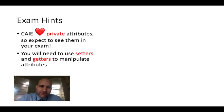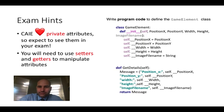Now a couple of exam hints for you Cambridge A-level people. CAIE love their private attributes. Absolutely love them. So expect to see them in your exam. You will also need to use these setters and getters to manipulate attributes. Okay, here is an exam question. Write program code to define the game element class. And tada, that is the mark scheme. Isn't it beautiful? Yes, if you are a real pythonista, please look away now from this horror movie.